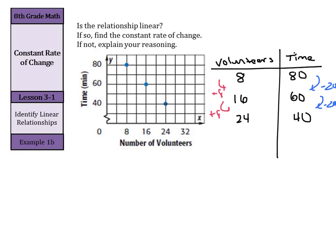So if I look at my rate of change here, we have 60 minus 80 over 16 minus 8, which is that negative 20 over 8, which simplifies down to about negative 2.5. So negative 2.5 minutes per volunteer.